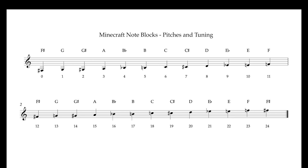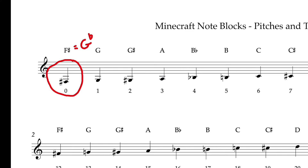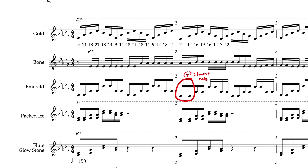Maybe now you can see why I transposed the original music up a half step. In the original piece, the lowest note in a lot of the parts was F, the lowest chord being F major. But the lowest note on a note block is F sharp or G flat. By transposing the original up a half step, all of the notes in each part will fit nicely into the range of the note block. So my lowest chord is going from F major to G flat major.